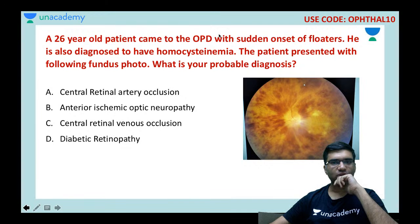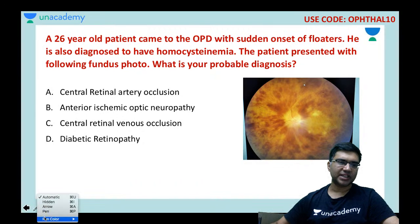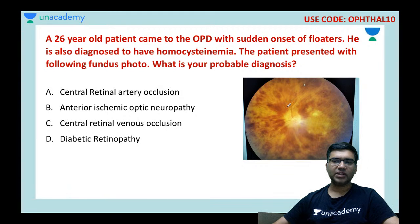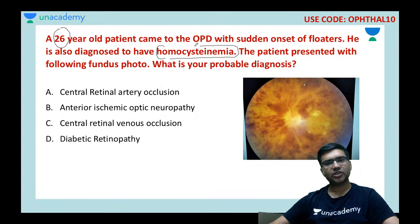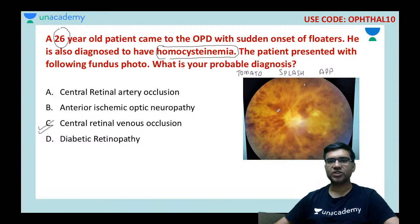A 26-year-old patient came to the OPD with sudden onset of floaters and is diagnosed with homocystinemia. The fundus photo shows hemorrhages all around and disc edema. Homocystinemia is a risk factor in this patient. This appearance is called a tomato splash appearance, and this patient is suffering from central retinal venous occlusion (CRVO).